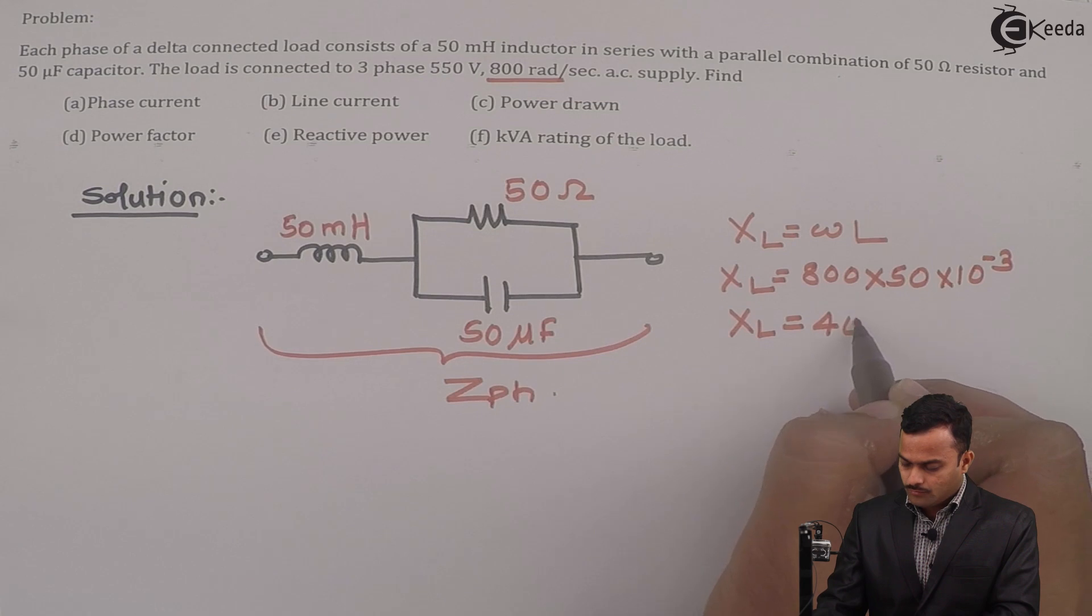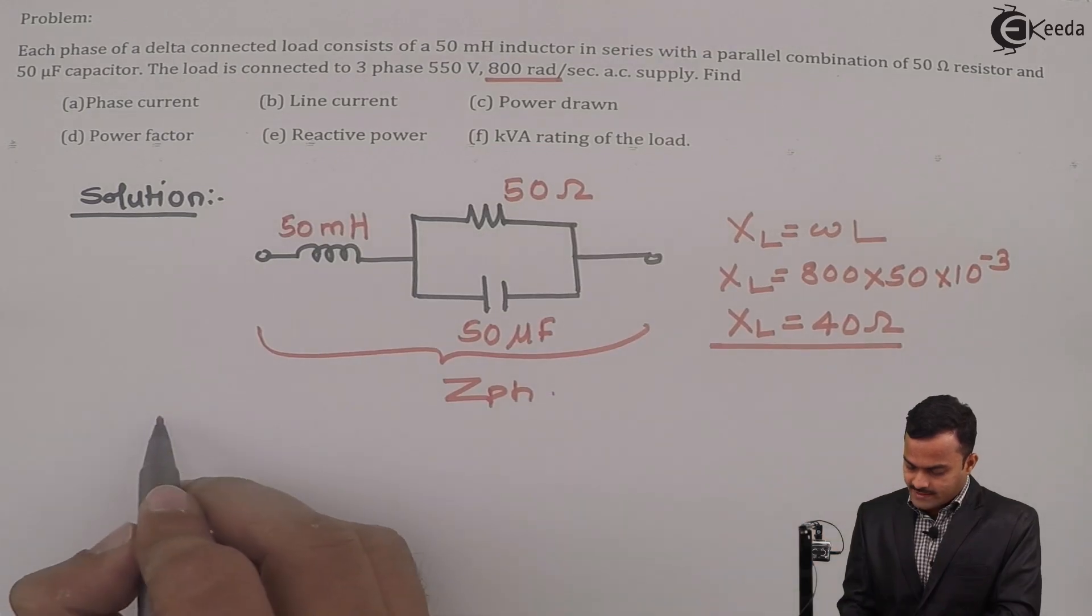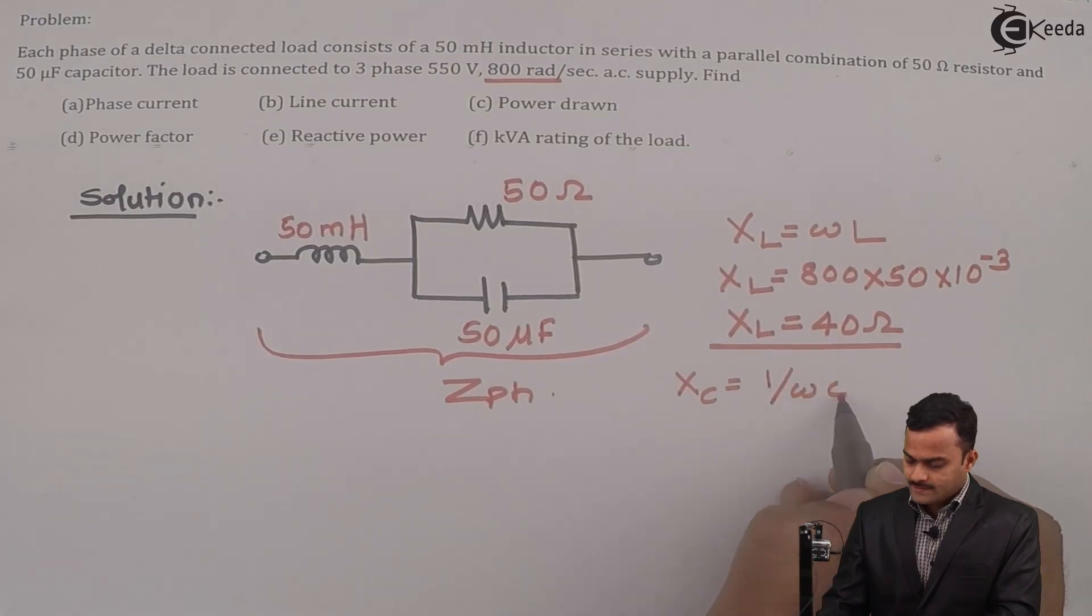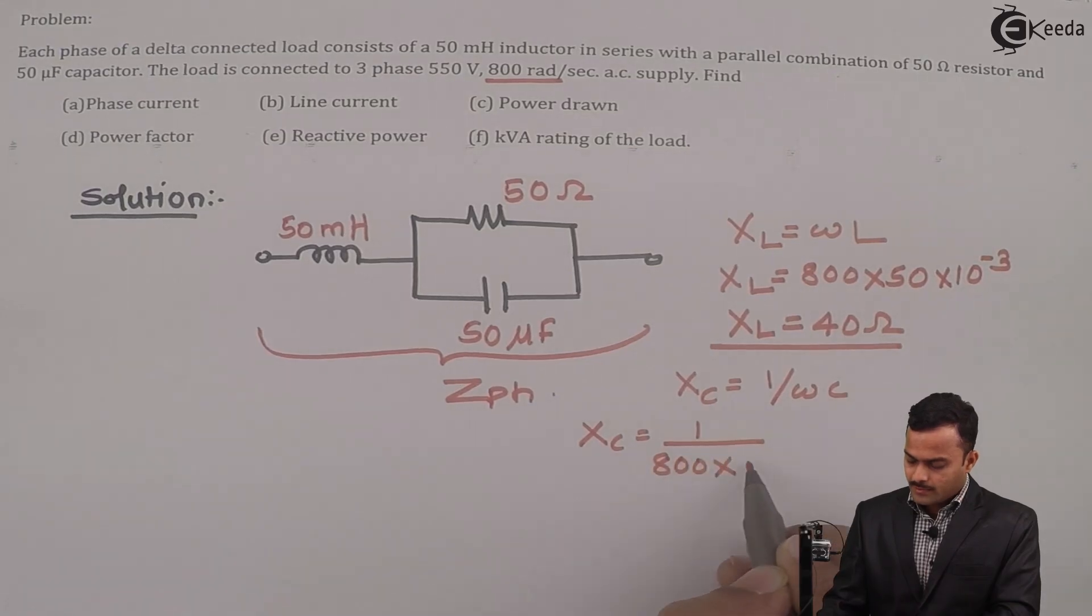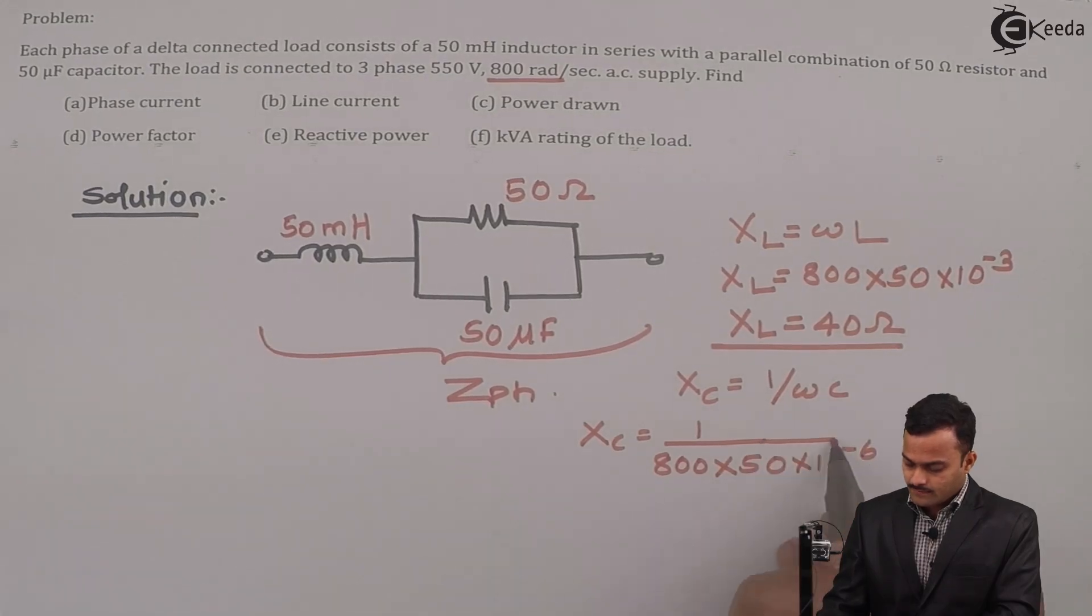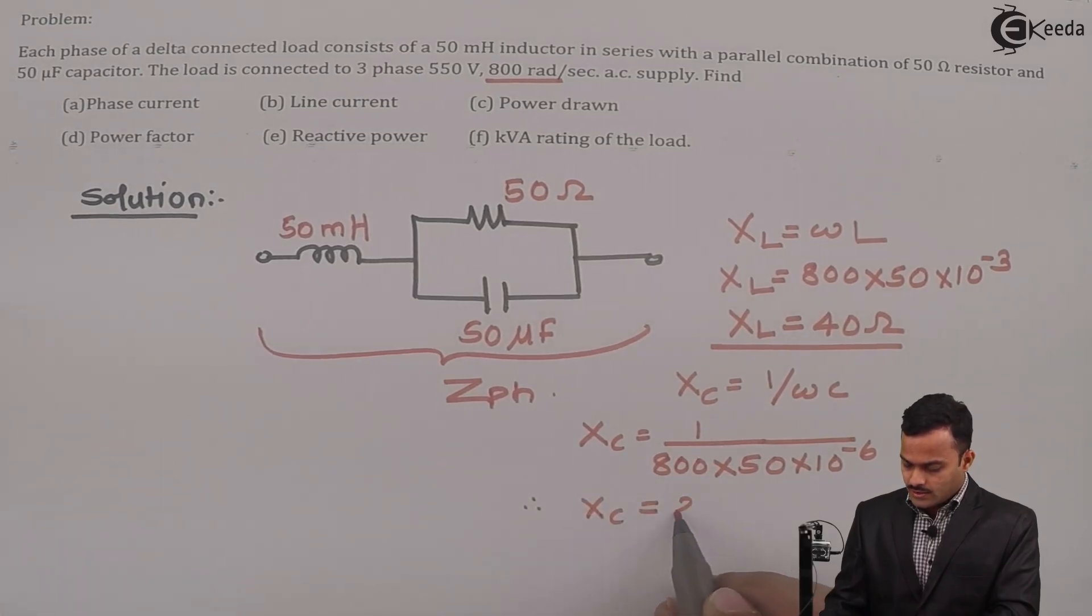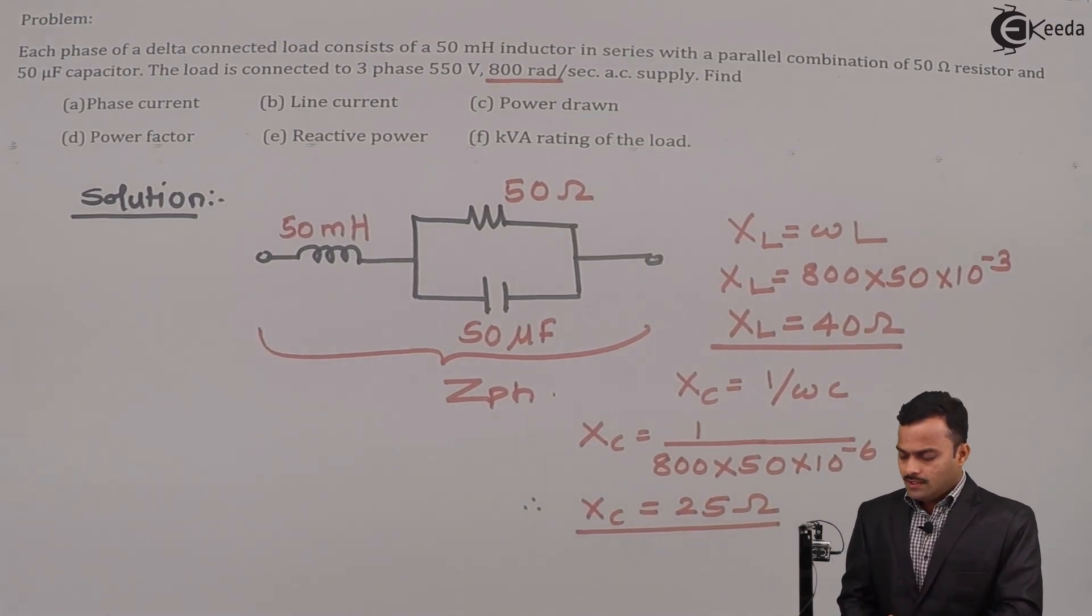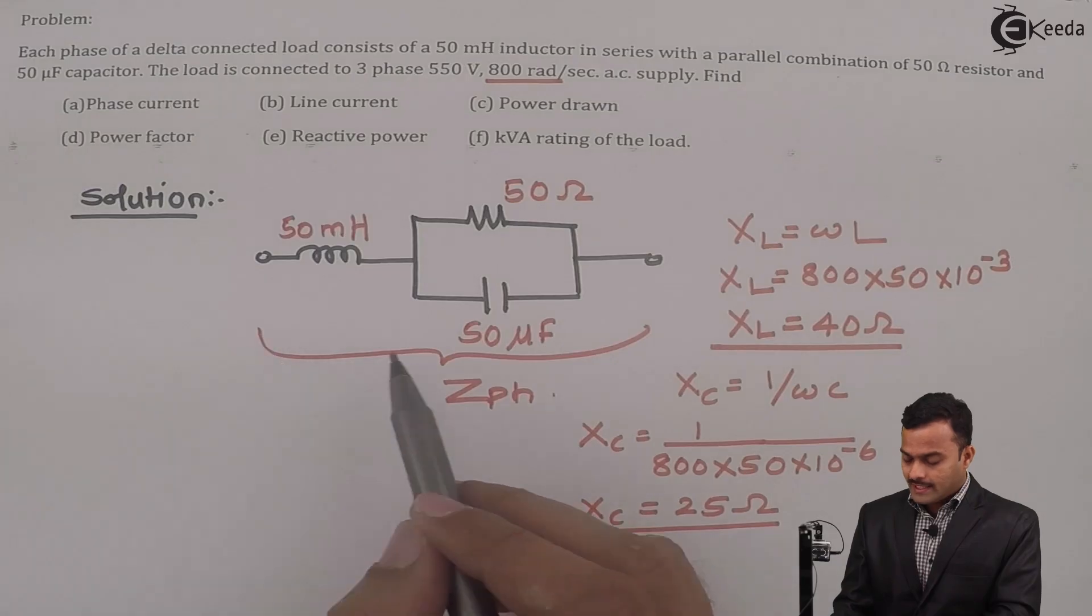Similarly XC is 1 upon omega C, so it's 1 upon 800 multiplied by 50 microfarad, hence 10 raise to minus 6. If you solve you will get XC as 25 ohm.